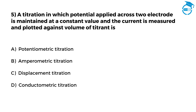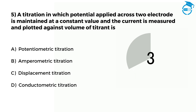Here is the next question. A titration in which potential applied across two electrodes is maintained at a constant value and the current is measured and plotted against volume of titrant. Option A: Potentiometric titration. Option B: Amperometric titration. Option C: Displacement titration. Option D: Conductometric titration. The right option is B, that is amperometric titration.